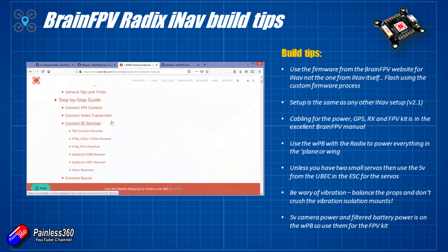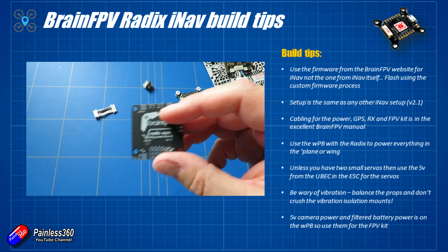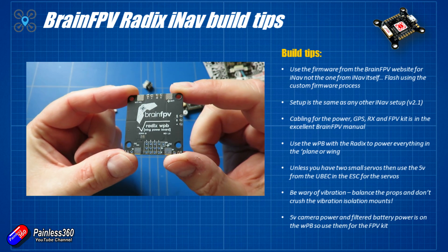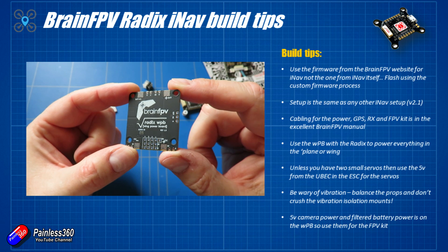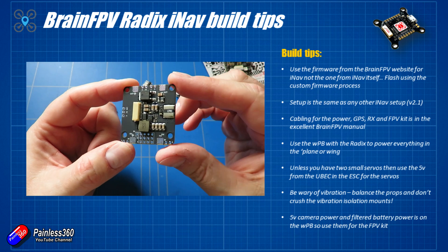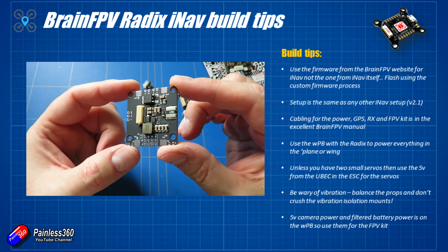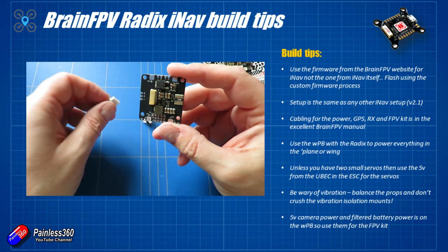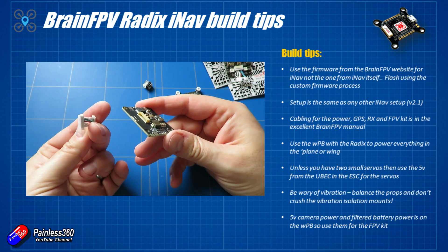I'm going to be using something called the Wing Power Board or WPB. This wing power board just plugs into the Radix and makes a really cute stack. It has enough outputs to run something like the Bixler, and it will manage the current as well as provide filtered voltages and 5 volts for all the FPV kit.